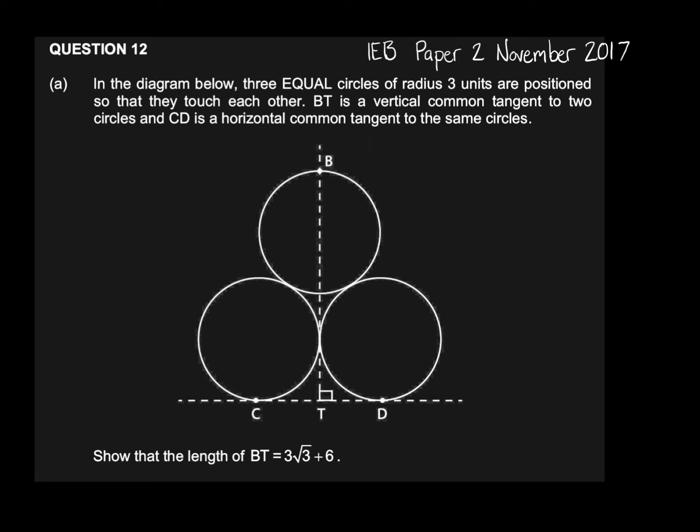Question 12 says in the diagram below three equal circles of radius 3 units are positioned so that they touch each other. BT is a vertical common tangent to two of the circles and CD is a horizontal common tangent to the same circles. Show that the length of BT equals 3√3 + 6.